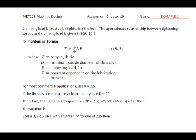So torque equals KD times P, where T is the torque in inch-pounds, D is the nominal outside diameter of the thread, P is the clamping load that's developed, and K is this constant which depends on the lubrication. It's really a friction factor is what it is. For most commercial applications, I want you to use K equals 0.15. Now, if the threads are completely clean and dry, most industries use K equals 0.2.